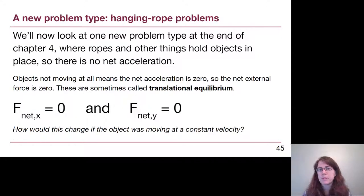The problem type itself tends to be called a hanging rope problem, and the idea is there are ropes and other forces that are holding an object in place. There may be multiple forces that we need to solve for, but the fact that it's not moving tells us that the net forces are going to be adding up to zero in both the x direction and in the y direction. This is sometimes called translational equilibrium, and we are going to see a more complete understanding of equilibrium when we get to Chapter 9. This could work if an object were moving at a constant velocity, net force would still be zero. That's just not a problem type that we're going to see in our curriculum, but this one we will and we need to recognize it.